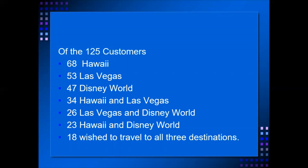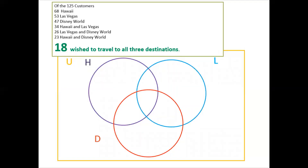We will start with 18 wish to travel to all 3 destinations. We have circles for Hawaii, Las Vegas, and Disney World. Since 18 wish to travel to all 3 destinations, we place it in the intersection of the 3 sets.